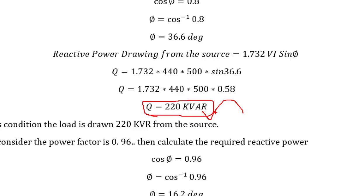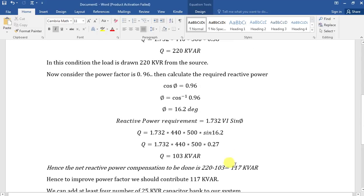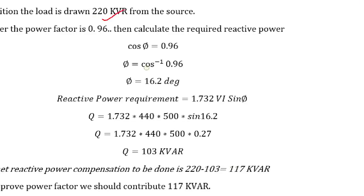If we drop in the grid, we will improve the power factor. At 0.8 it will drop in the power factor; if we work at 0.96 then we will improve the power factor. We are going to target 0.96, and now the existing power factor is 0.96. We are going to calculate the relative power at 0.8 and drop the grid at 0.96.